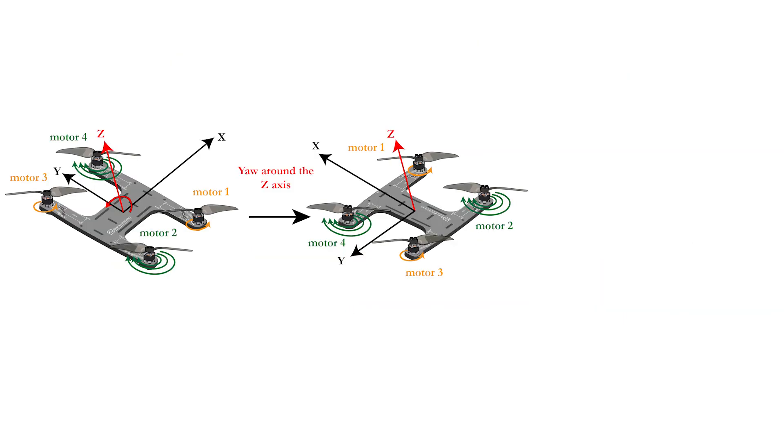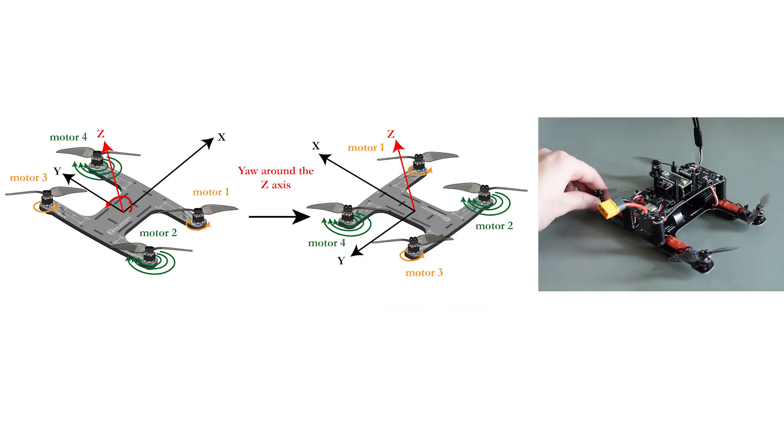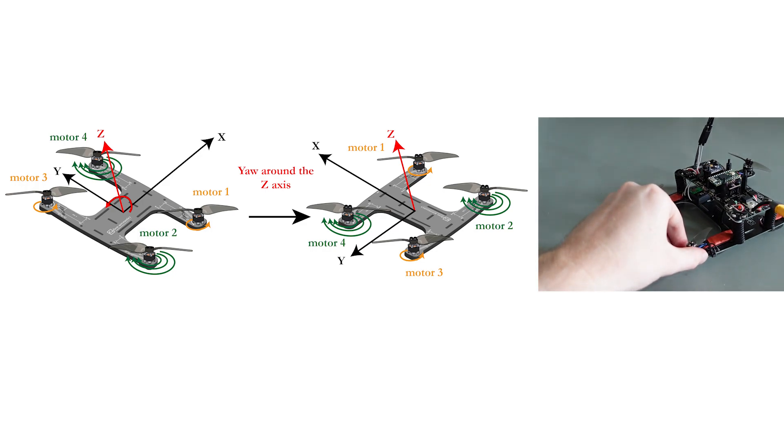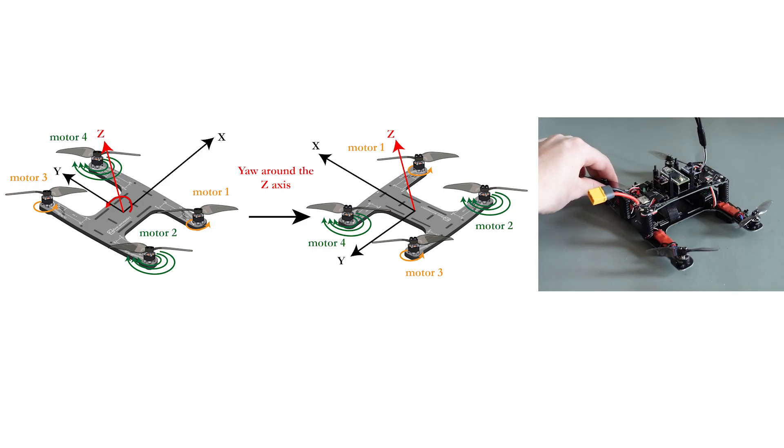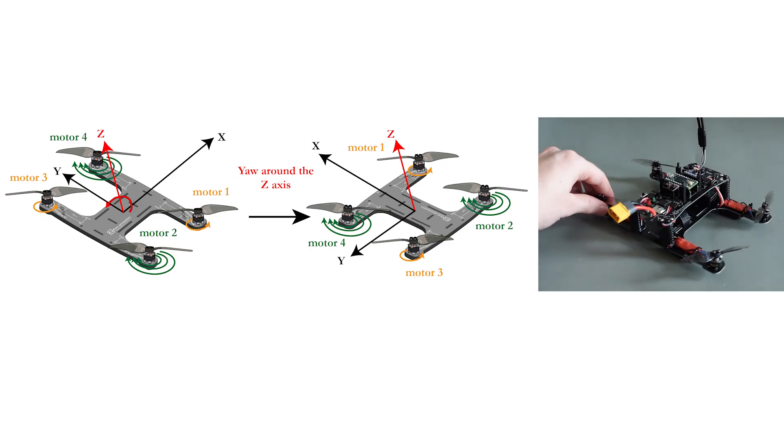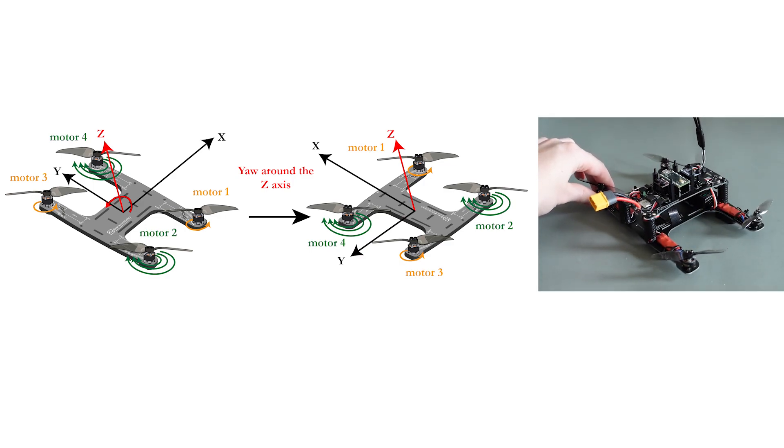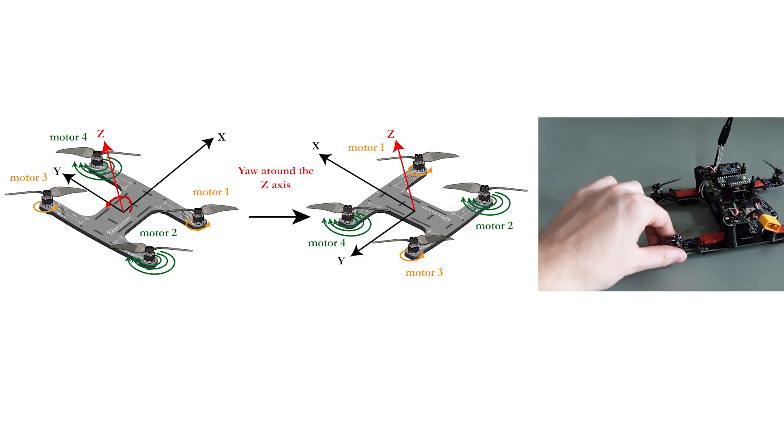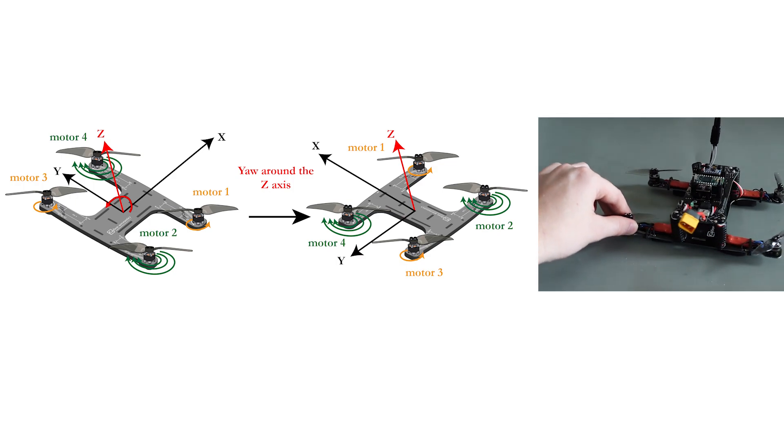The final possible movement is a yaw turn around the z-axis. In this case, the motors that spin in the same clockwise direction should reduce power. This might seem counter-intuitive, but the resulting torque on the frame is always the opposite as the spinning direction of the motors.